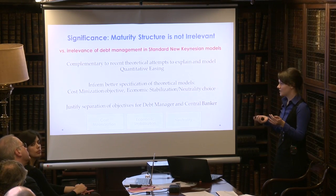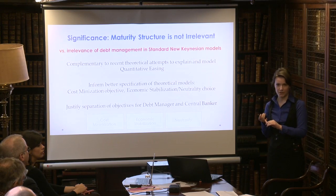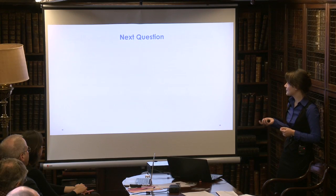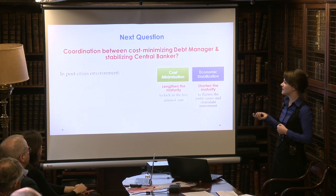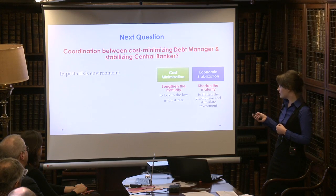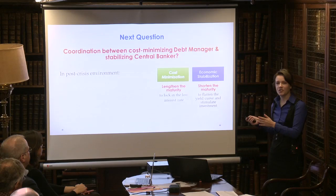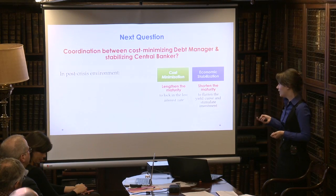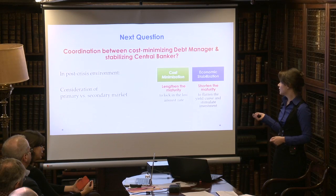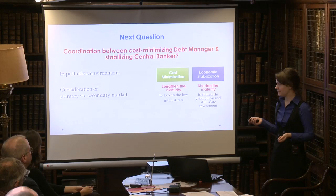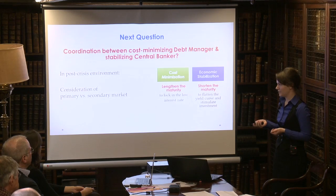More specifically, you can separate the objectives: the debt manager can be the one who cost-minimizes, and the central banker can use the short-term interest rate as a conventional monetary policy tool, as well as the maturity structure as a non-conventional policy tool. The next question is the coordination between a cost-minimizing debt manager and a stabilizing central banker. In fact, you've seen this in the US, where the Treasury was lengthening the maturity while the central bank was shortening it. Do these two effects offset each other? Well, the caveat is that the Treasury operates in the primary market — the first-time borrowing of new debt — whereas the central bank operates in the secondary market, where previously issued debt is actively traded. So maybe they don't offset each other; it depends on the pass-through between primary and secondary markets, and that hasn't been modeled theoretically, to my knowledge.